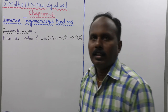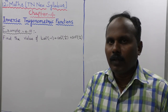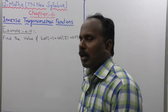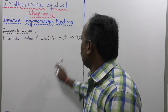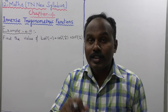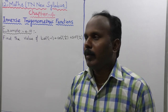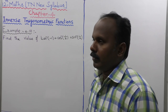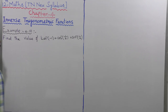First, the range of tan inverse theta is the open interval minus π/2 to plus π/2. Second, cos inverse has range the closed interval 0 to π. Third, sin inverse has range the closed interval minus π/2 to plus π/2. That is the range of these three terms — this one exists, this also exists, and sin inverse of minus 1 by 2 also exists.